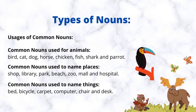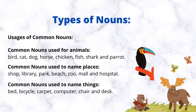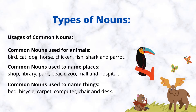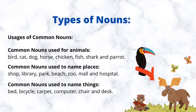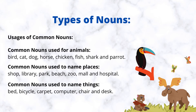Usages of common nouns. Common nouns used for animals: bird, cat, dog, horse, chicken, fish, shark, and parrot. Common nouns used to name places: shop, library, park, beach, zoo, mall, and hospital.